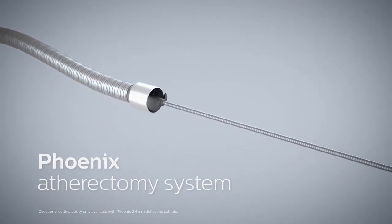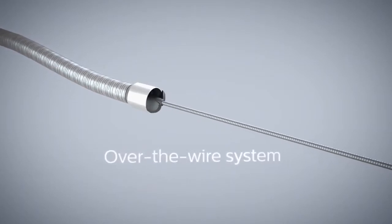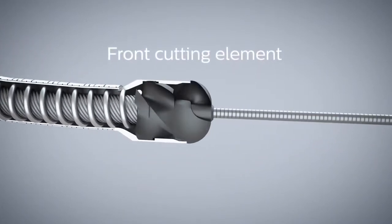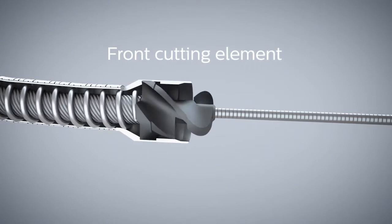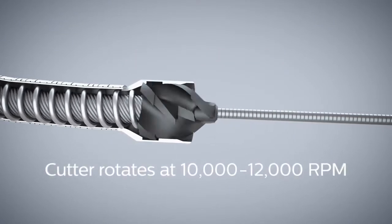The Phoenix atherectomy system is an over-the-wire peripheral atherectomy catheter. It has a front cutting element located at the distal tip which rotates at 10,000 to 12,000 rpm.